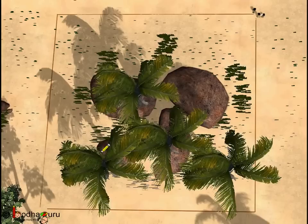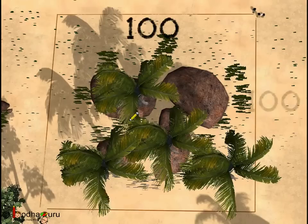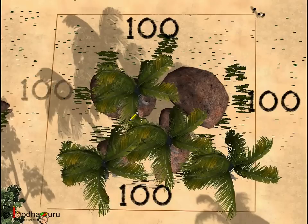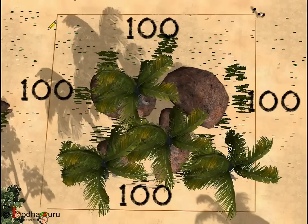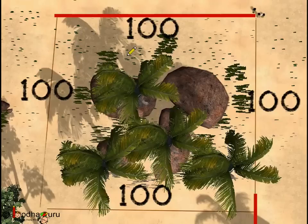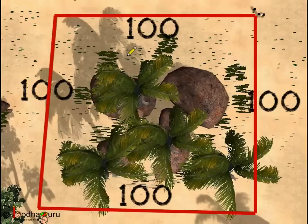Now coming back to the story. In the story, children moved in different directions covering 100 steps and got a square with each side as 100 steps. Can we find the perimeter of this square? Yes we can. The perimeter is equal to the total distance around the figure, or the sum of the line segments that make up the figure. So it would be 100 plus 100 plus 100 plus 100, which is 400 steps. The perimeter here is equal to 400 steps.